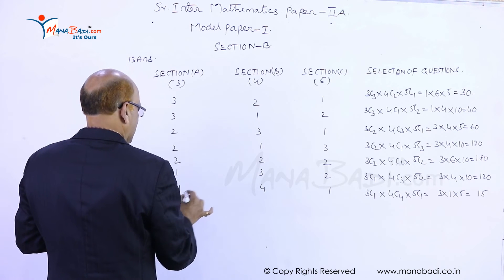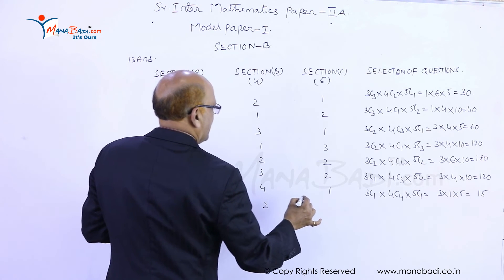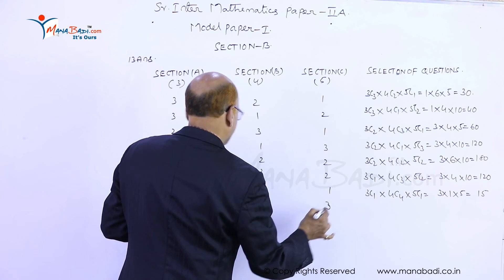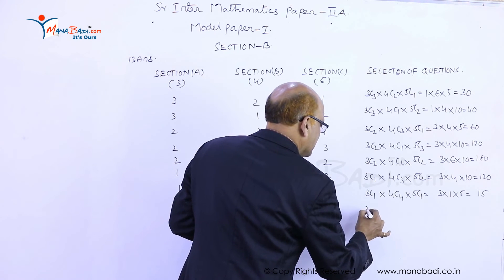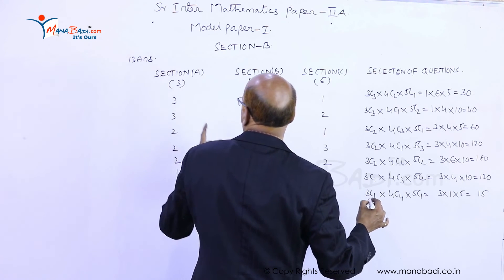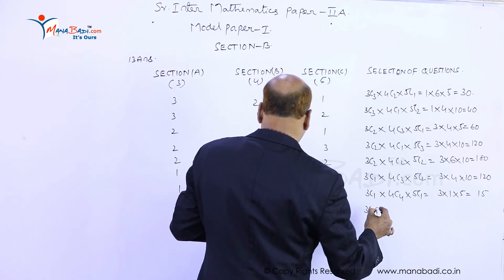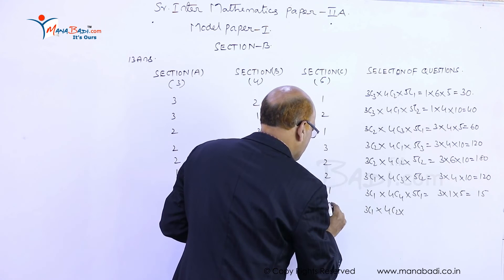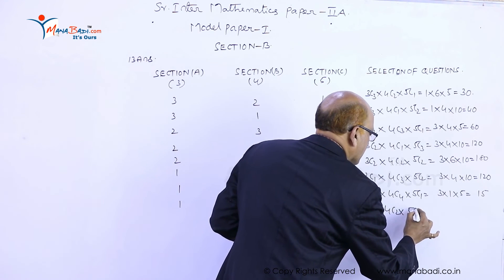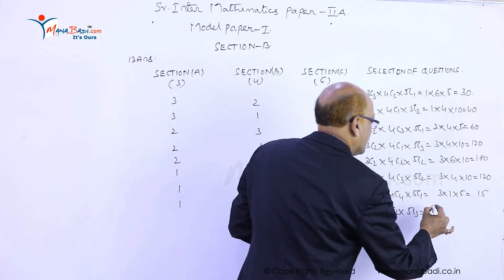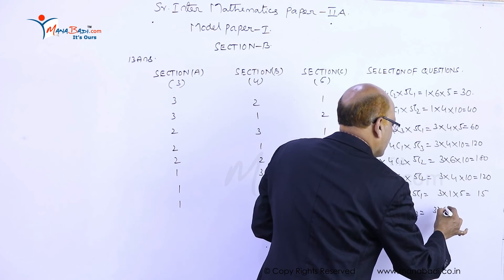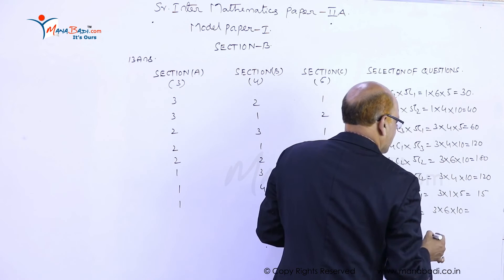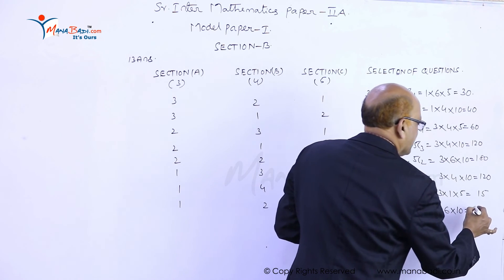Next: one question from A, two questions from B, and three questions from C. This will be 3C1 into 4C2 into 5C3. 3C1 is 3, 4C2 is 6, and 5C3 is 10. So 60 into 3 equals 180.